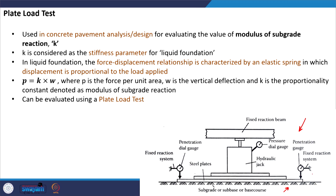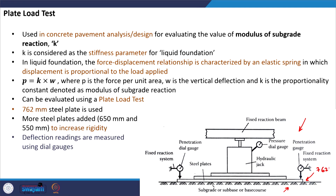The plate load test setup comprises a set of plates. The diameter of the plate that rests on the particular layer is 762 mm — this is the standard diameter. Additional plates are kept in decreasing diameter to increase rigidity; the next plate is around 650 mm and the top plate is around 550 mm. We have 2 to 4 dial gauges to continuously record the penetration of the plate once we start applying load. The load is applied using a hydraulic jack and monitored using a pressure dial gauge.